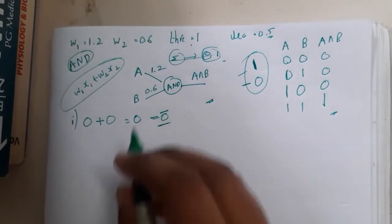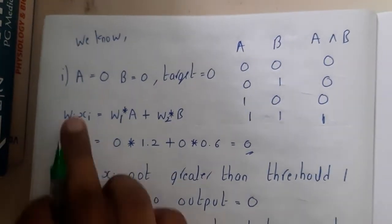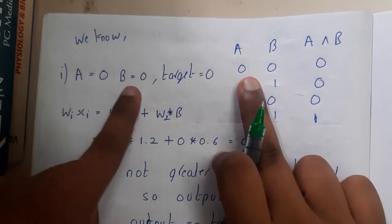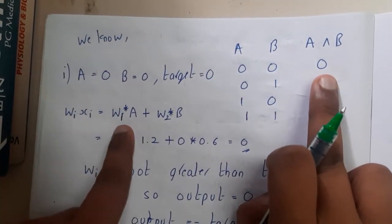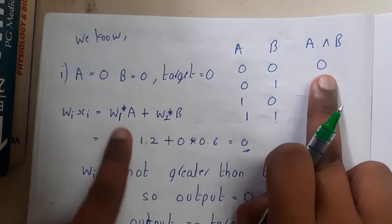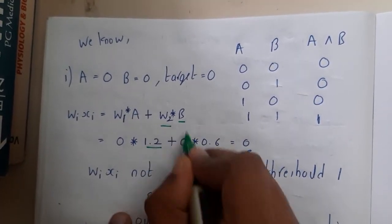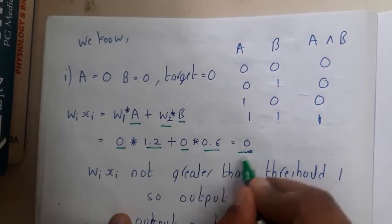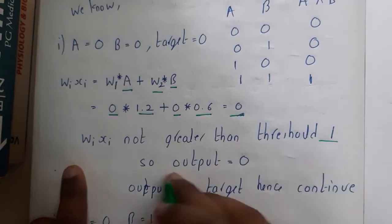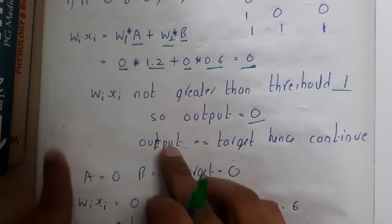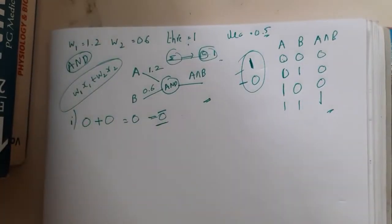Step by step: A=0, B=0, target=0. w_i·x_i = w1·A + w2·B = 1.2×0 + 0.6×0 = 0. Since 0 is not greater than or equal to threshold 1, output is 0. Output equals target, so we can continue to the next case.